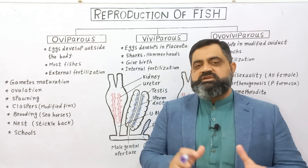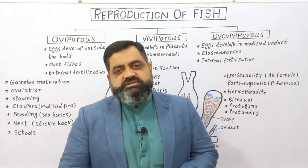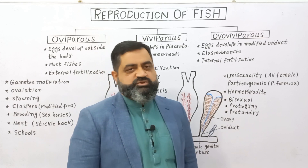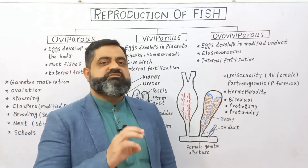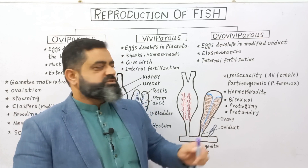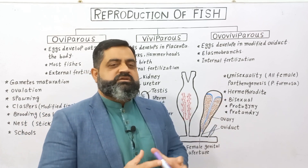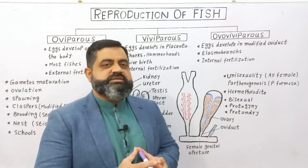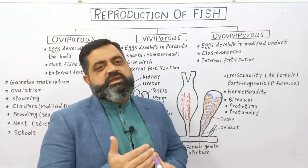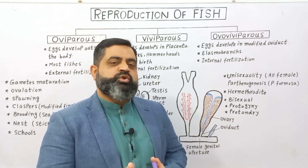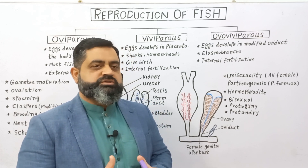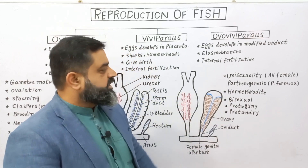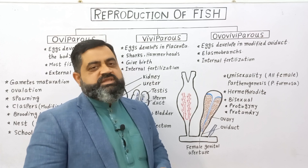Some fishes are unisexual, meaning the fish is only female with no male. This process is known as parthenogenesis. In this condition, the female produces a large quantity of eggs which are not fertilized by a male. Because these eggs are haploid and unfertilized, they still develop into larvae and then into new fish. Because there is no fertilization, this process is called parthenogenesis.